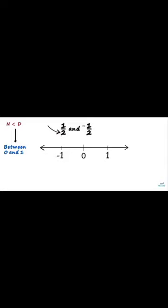Now we divide the length between 0 and 1 into equal parts. How many equal parts? The denominator tells us the number of equal parts. The denominator is 2, so we divide it into 2 equal parts. The numerator tells us the number of parts starting from 0. The numerator is 1, and therefore we take 1 part from 0 and mark 1 by 2 here. We can use the same procedure to mark minus 1 by 2 on the left side of 0 — divide it into 2 parts and mark minus 1 by 2 one part away from 0. Just as integers had corresponding values, rational numbers too have corresponding values. In our example, minus 1 by 2 corresponds to 1 by 2.